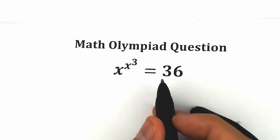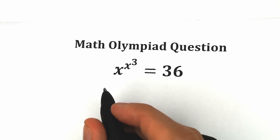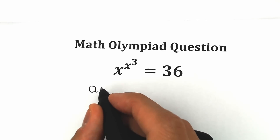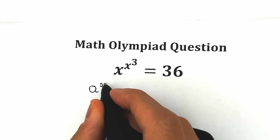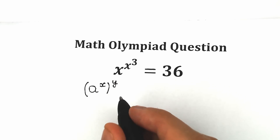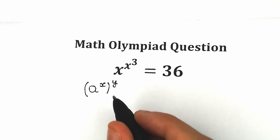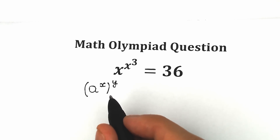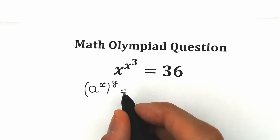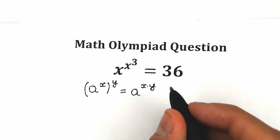First of all, here is our question, and before solving I want to write a really important property. Take a look closely at what we have right here. For example, we have a to the power x, and we raise this expression to the power y. Everyone knows this property from school — this is a very important power rule. As a result, if we raise a to the power x, then raise to the power y, we will have a to the power x times y.